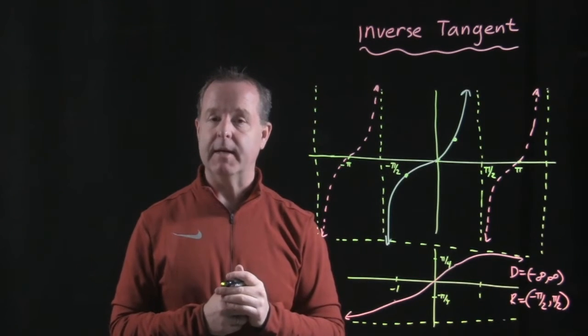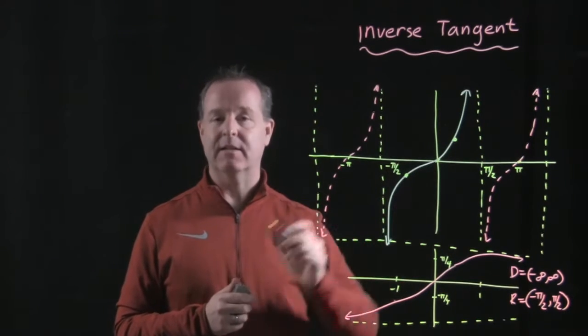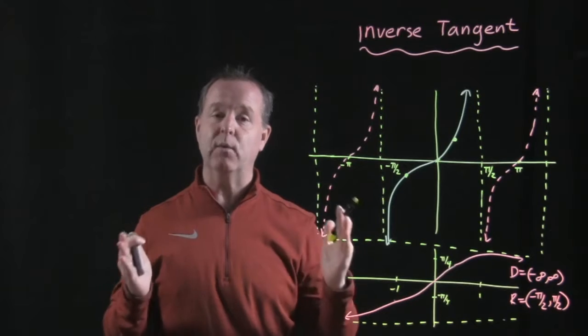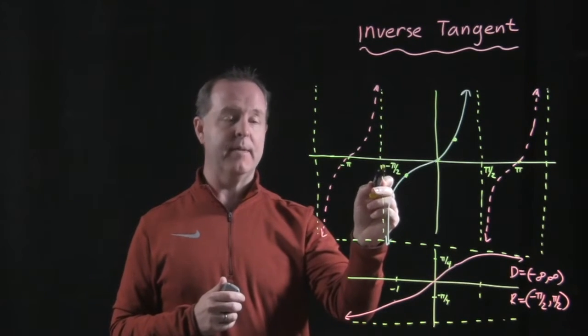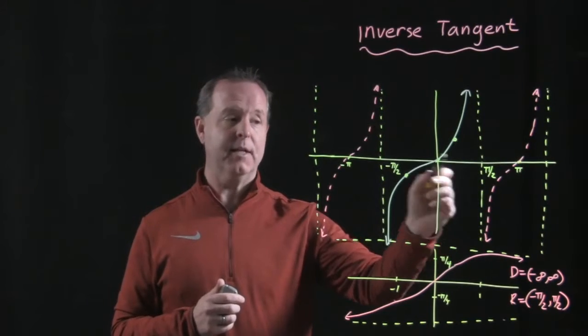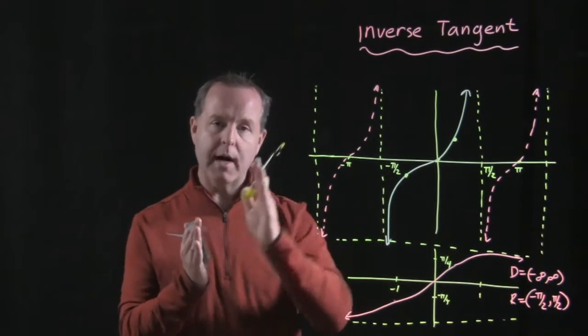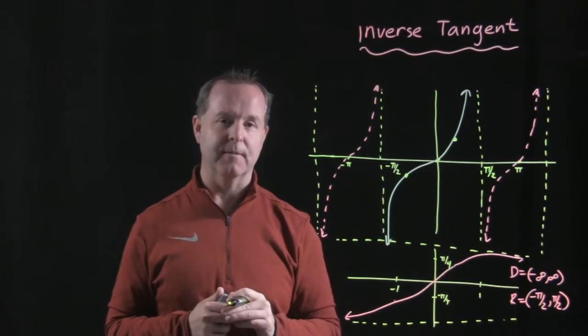What we'll need to do again, because that does not fit a one-to-one function, we need to restrict the domain of the normal tangent function from negative π/2 to π/2 and just focus on one repetitive cycle, one cycle of the tangent function.